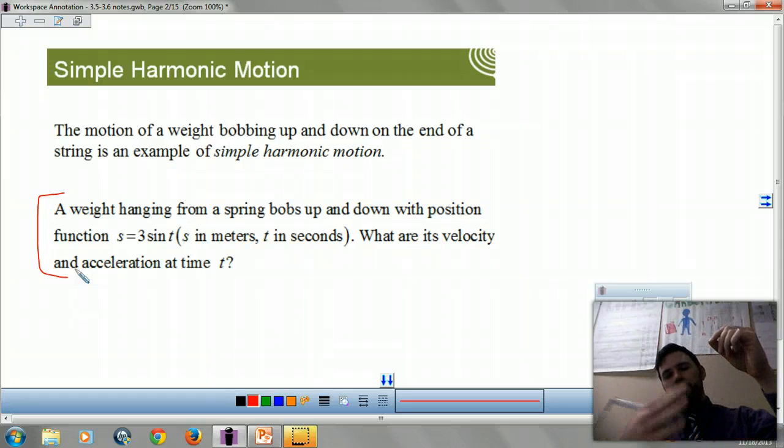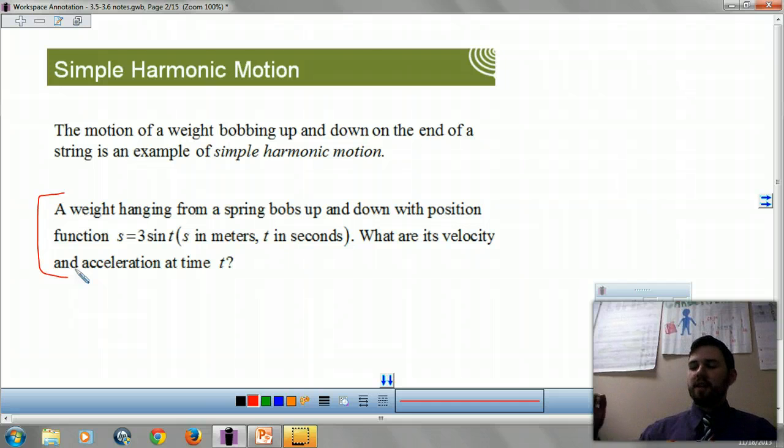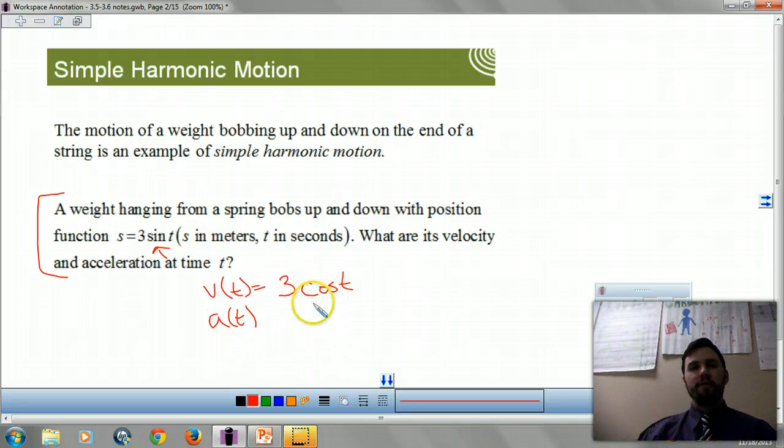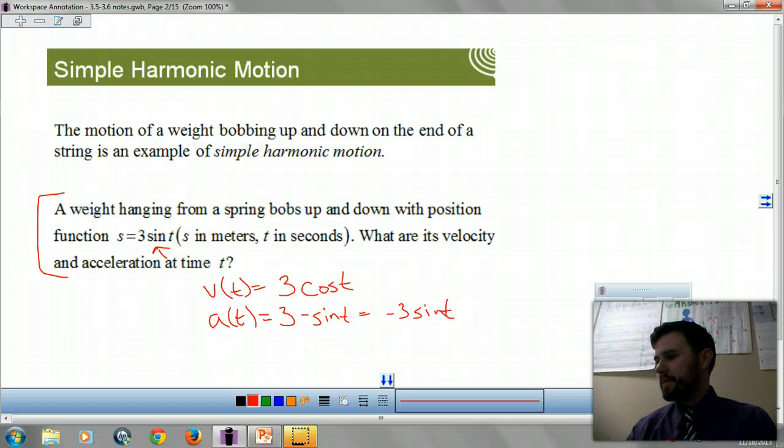So let's take a look at a problem. A weight hanging from a spring bobs up and down with the function of S equals 3 sine of T. So that's our position. We need to find the velocity and acceleration. So our velocity is the derivative of our motion. So our derivative of sine is cosine. Remember that 3 just comes out in front because coefficients get to come out in front of our derivative. Now our acceleration of T is we take the derivative of 3 cosine of T. So our 3 still stays out in front. Derivative of cosine is negative sine. So it's negative 3 sine of T. That's all there is to this problem.